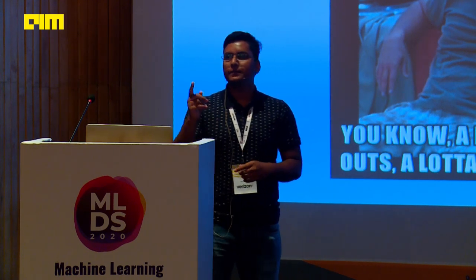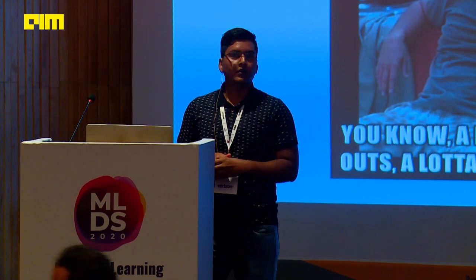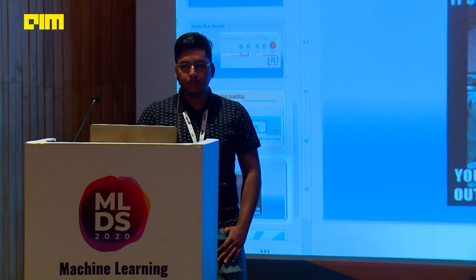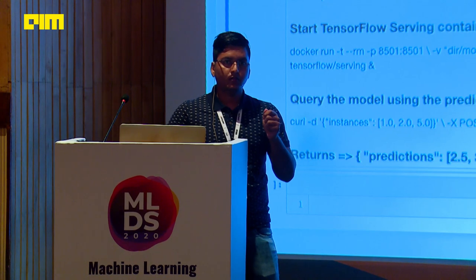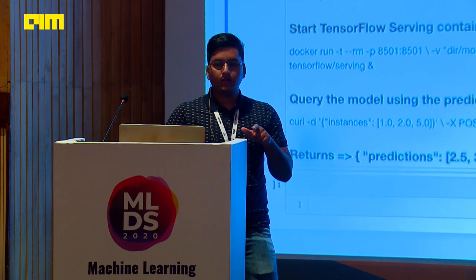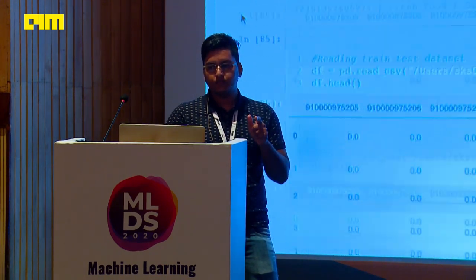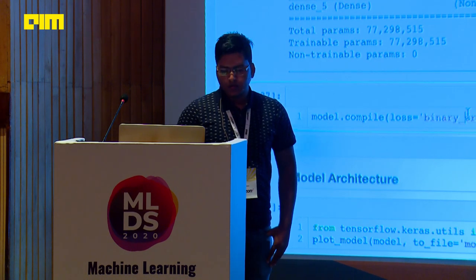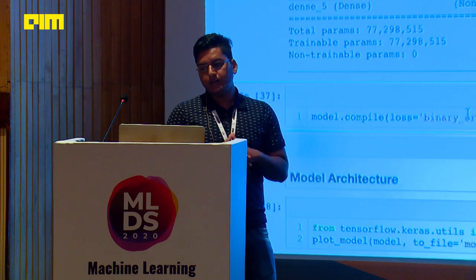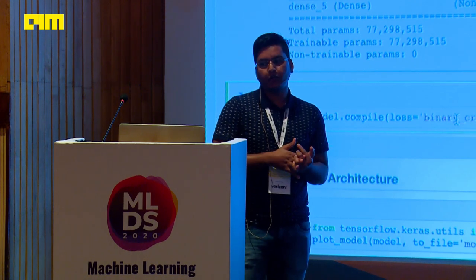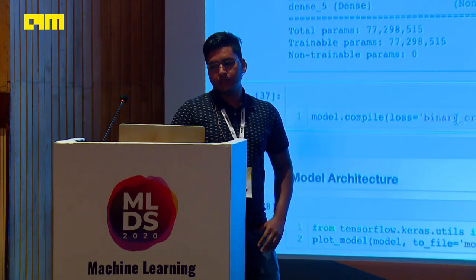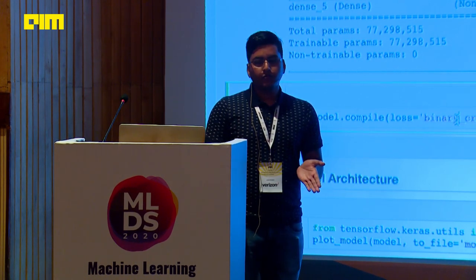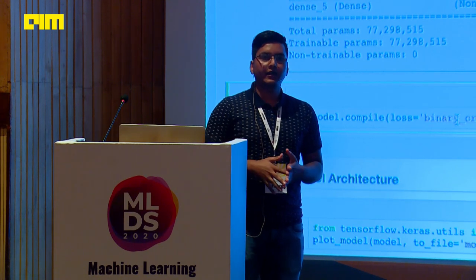Q&A: On using binary cross-entropy for multi-class classification — ideally it should be categorical cross-entropy, but we trained on both loss functions and binary cross-entropy gave better accuracy on our dataset. We tried both categorical and binary, and kept whichever gave higher accuracy. Ideally, categorical cross-entropy would be the correct choice.